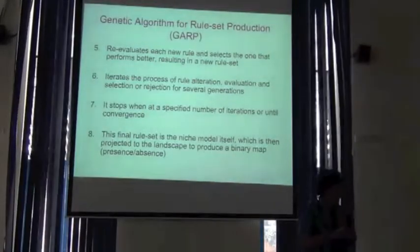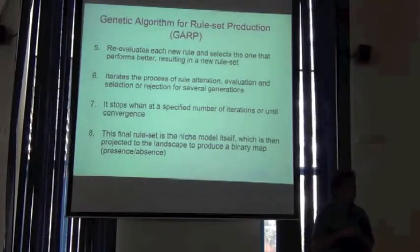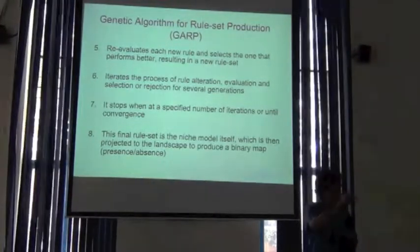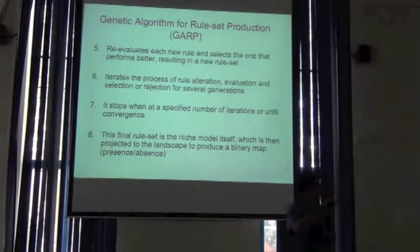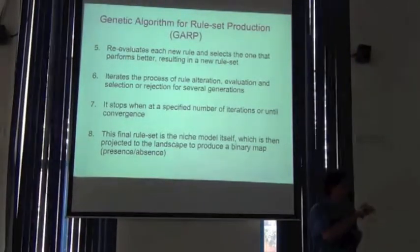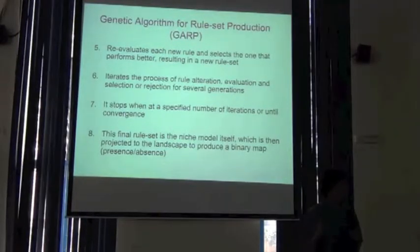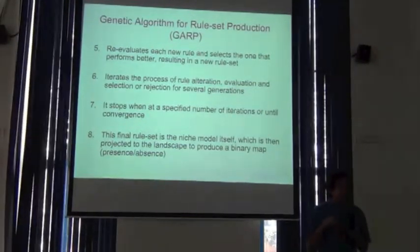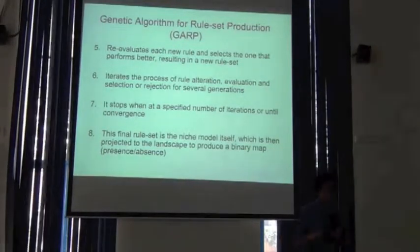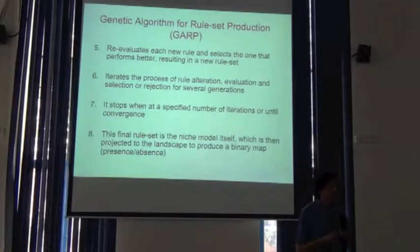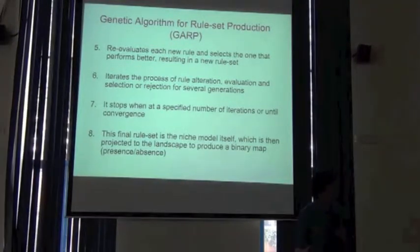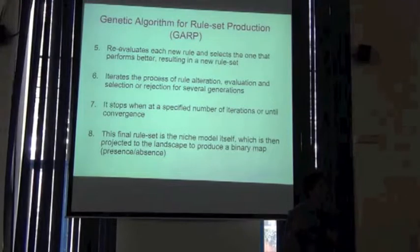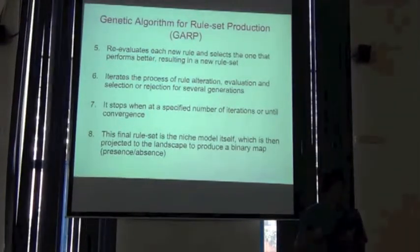With this set of rules, GARP goes to the geographic space and asks each pixel whether it meets the conditions established by the rules, assigning a classification of present or absent to each pixel depending on its environmental conditions. The final product of a GARP modeling process is a binary map — a map that says the species is present or absent. This contrasts with, for example, MaxEnt, which produces a probability map; GARP produces only a binary map.